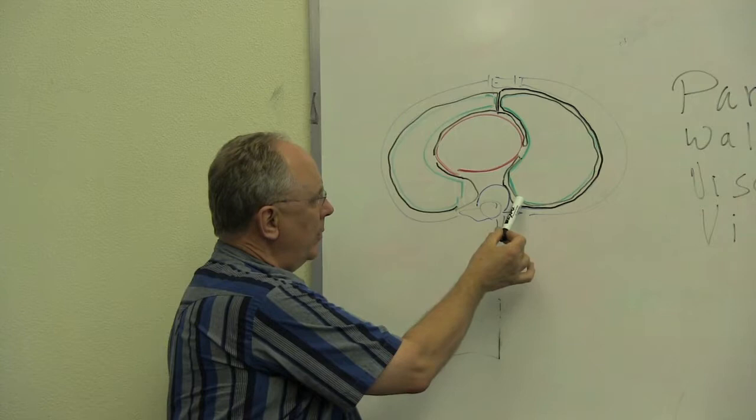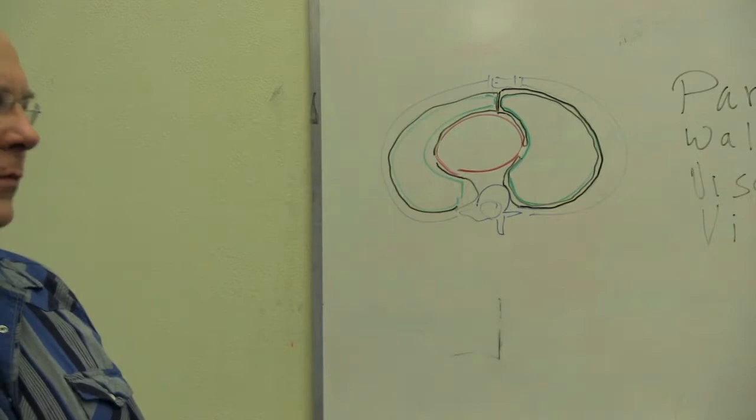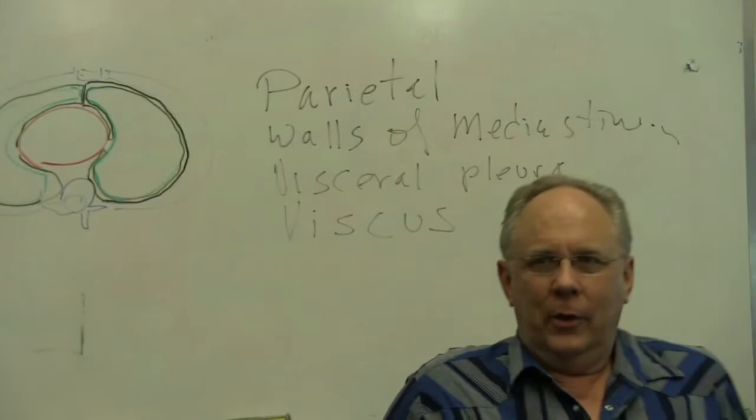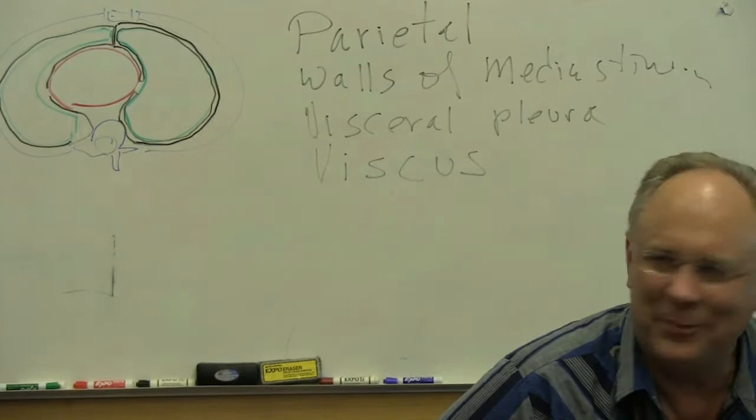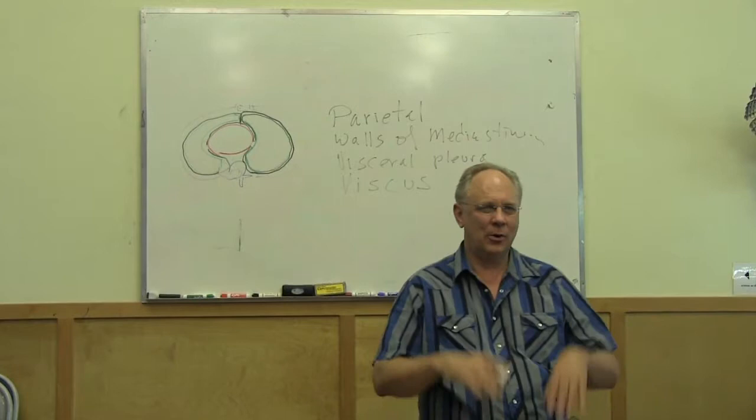What can be found between the visceral pleura and the parietal pleura? Fluid. And what sort of fluid might one find there? Pleural fluid. Yes, indeed. Actually, I've never quite heard that term before. When we do thoracentesis, it's pleural fluid. There's a little more general name.